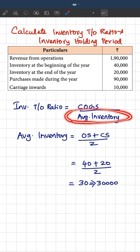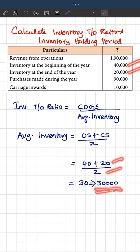Next, we have to find out average inventory, which is nothing but opening inventory plus closing inventory by 2. And we know opening inventory is 40,000, closing inventory is 20,000. So 40 plus 20 by 2, 30, and it is 30,000.